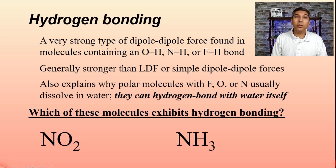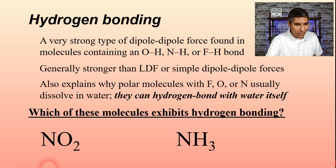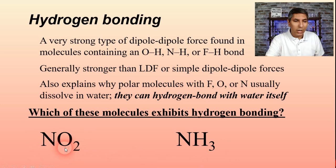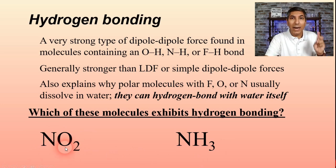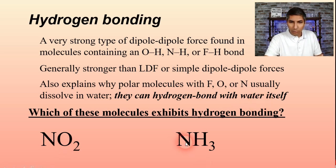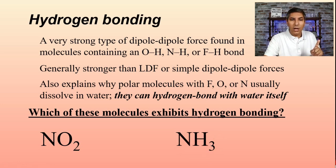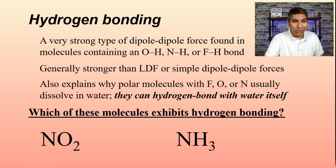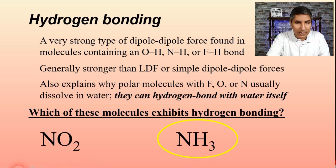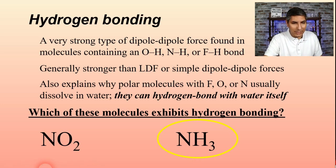Let's look at an example: which of these molecules exhibits hydrogen bonding — NO2 or NH3? If you draw out NO2, it is a polar molecule, so it has London dispersion forces and dipole-dipole forces. But NH3 is a polar molecule that also has an N-H bond, so it has London dispersion forces and hydrogen bonding. Hydrogen bonding is generally stronger, so NH3 exhibits hydrogen bonding, and NO2 does not.